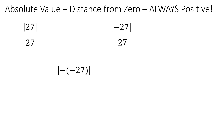When we have a more complicated problem, you can think of the absolute value bars like parentheses. If you have operations to do inside the absolute value, you do the mathematical operations on the inside first, then take the distance from zero. For example, if we simplify two negatives inside, we get the absolute value of 27, which is 27.